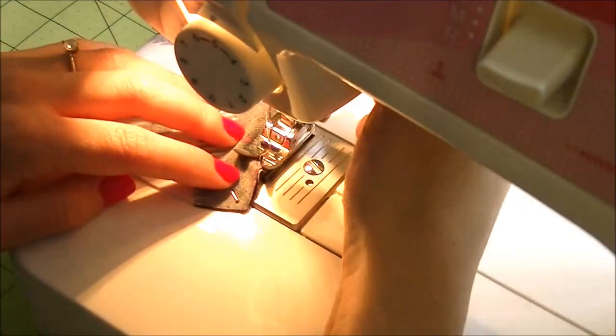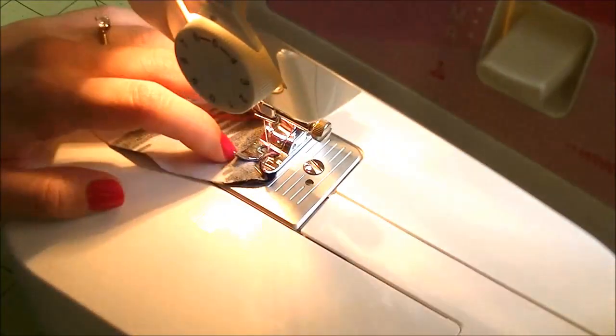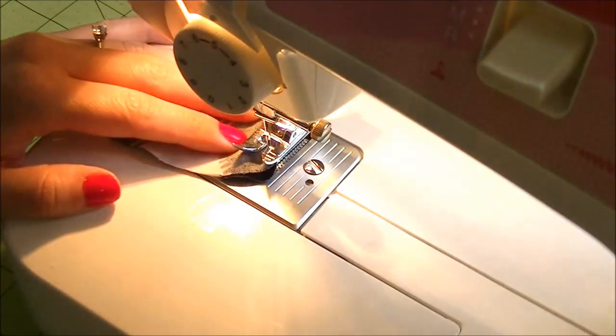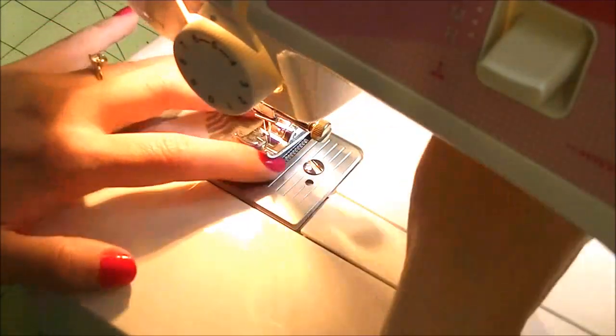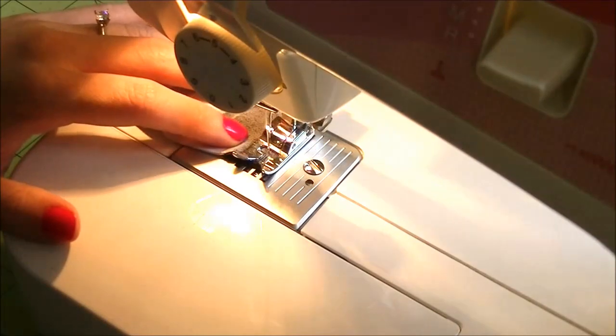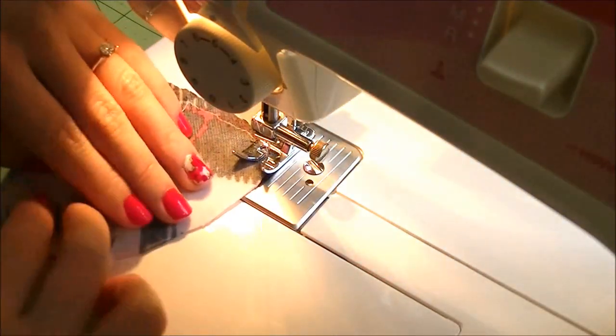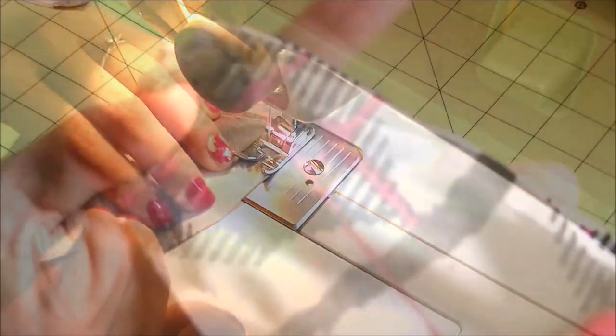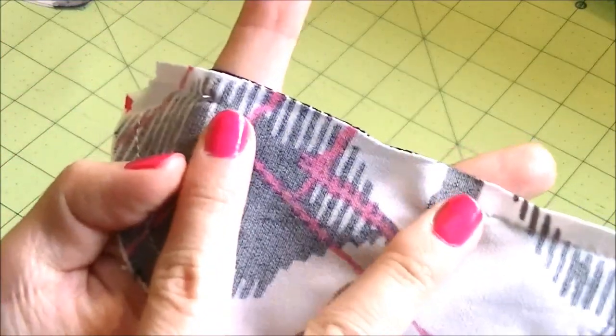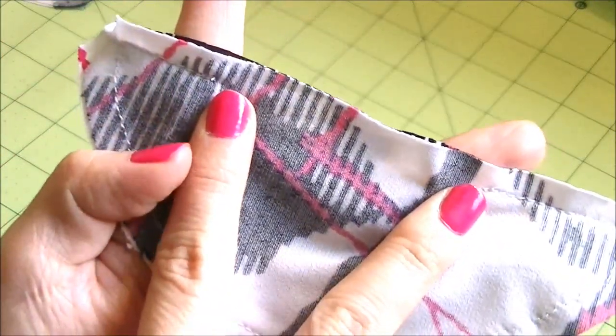Once you have everything ready, take two pieces of the fabric at a time, place right sides together and sew around the edge with a 5mm or a quarter of an inch seam allowance. Leave a 5 centimeter or 2 inch gap so you can turn it inside out. Repeat this with the other set of the fabric.